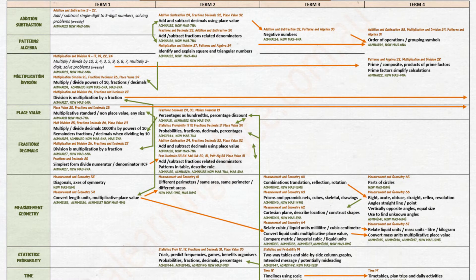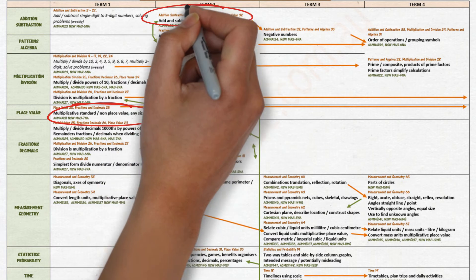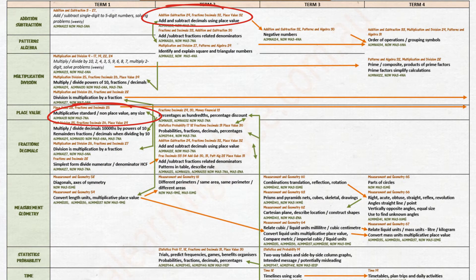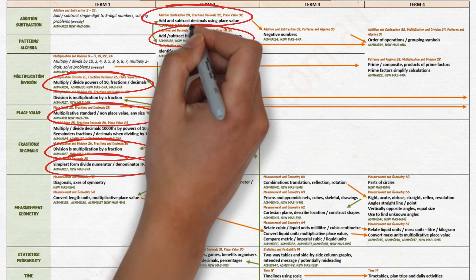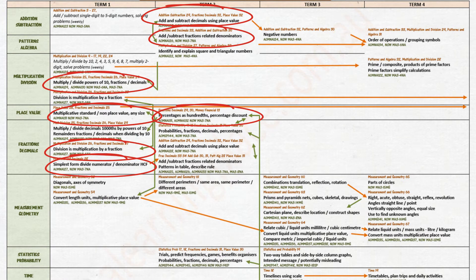The focus of number and algebra in Year 6 is extending standard, non-standard and multiplicative place value to numbers of any size, and using this understanding to add and subtract decimals using place value, and multiplying and dividing by powers of 10. Fractions and decimals understanding is extended to percentages. Students explain that division is multiplication by a fraction and use their understanding of highest common factors to create fractions in their simplest form and to add and subtract fractions with related denominators.